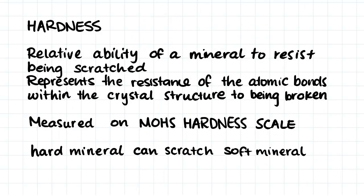The next property we would use to classify minerals is mineral hardness. Hardness means the relative ability of the mineral to resist being scratched. It actually represents the resistance of the atomic bonds within the crystal structure and their resistance to being broken. The hardness of a mineral is measured on Mohs hardness scale, and we say that a hard mineral can scratch a more soft mineral, which is pretty obvious.